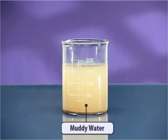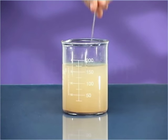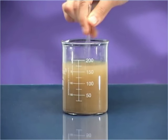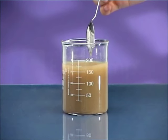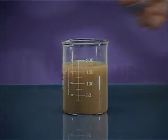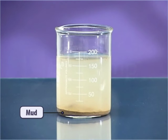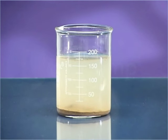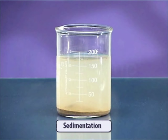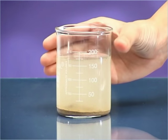Take some muddy water in a beaker — it is a mixture of soil and water. Stir this mixture well and leave it to settle for half an hour. The mud settles down at the bottom of the beaker by the process of sedimentation.